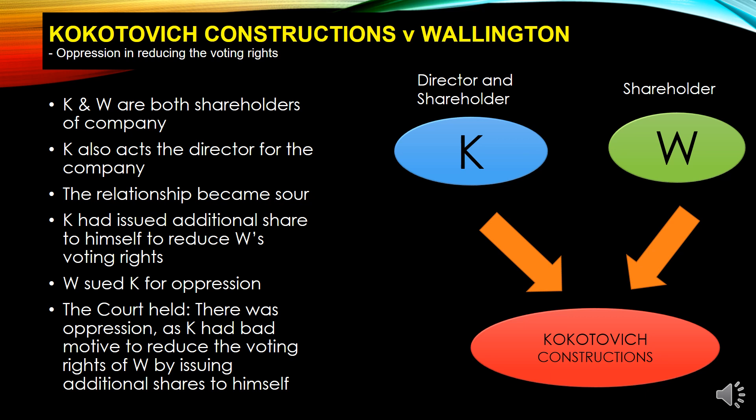The court held that there was oppression, as K had bad motive to reduce the voting rights of W by issuing additional shares to himself. This is an illustration of oppression against the members.